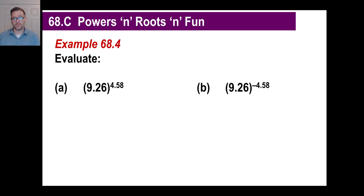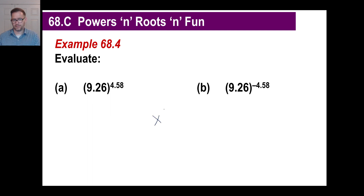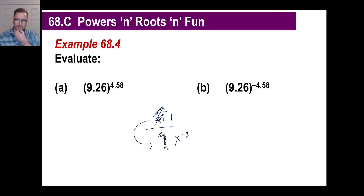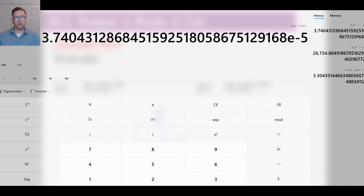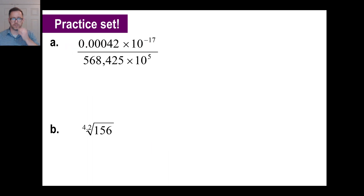Now let's try 9.26 to the negative 4.58 power. Remember from algebra that a negative exponent means 1 over that value, so this should be about 1/26,000. Enter 9.26, hit the power button, type 4.58, then press the negative/change-sign button to make it negative 4.58, and hit equals. The answer is 3.74 times 10 to the negative 5th — don't forget that part at the very end.